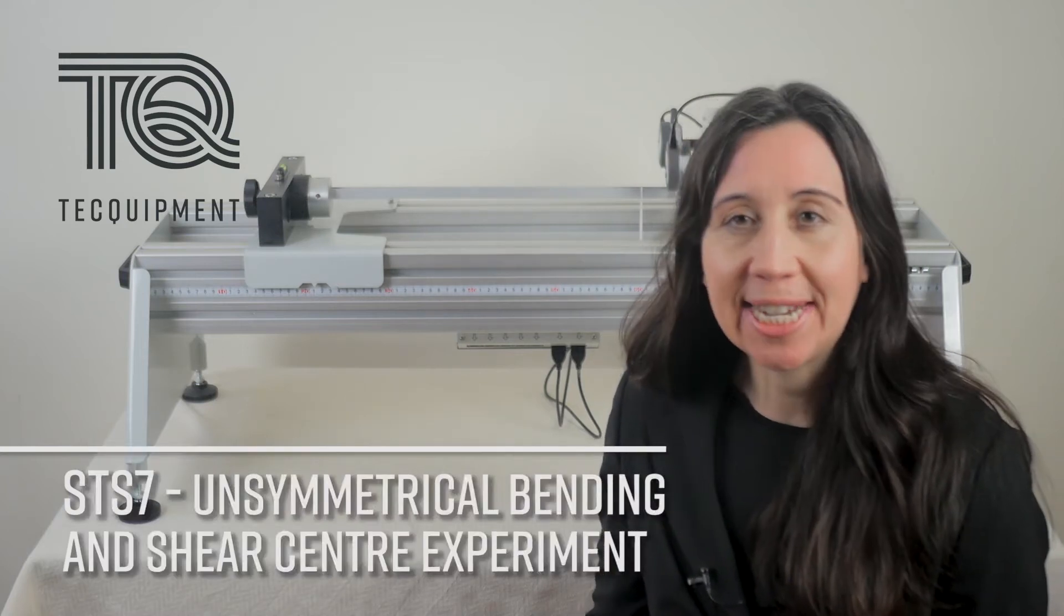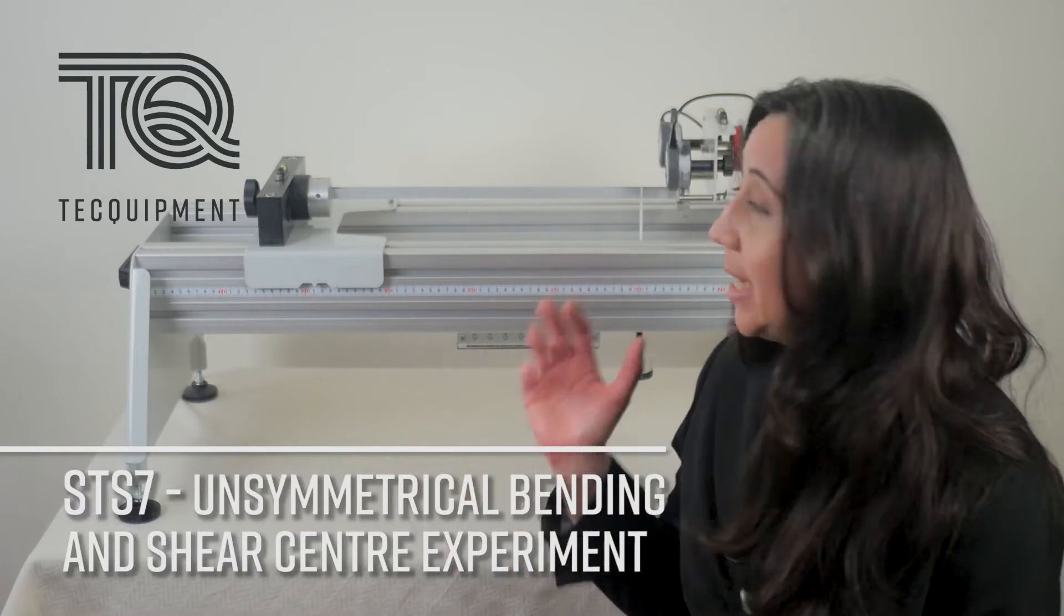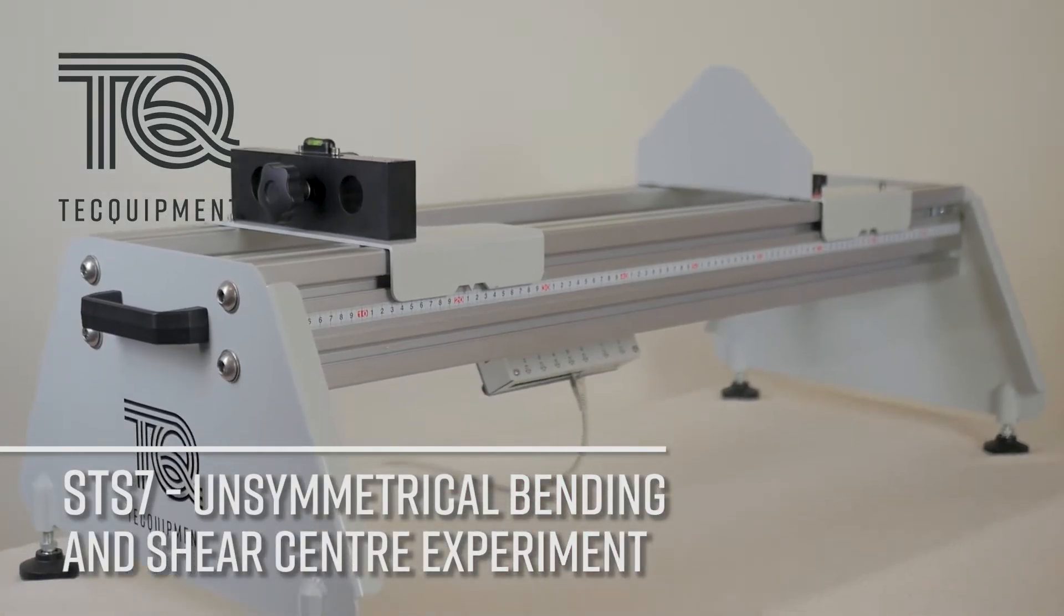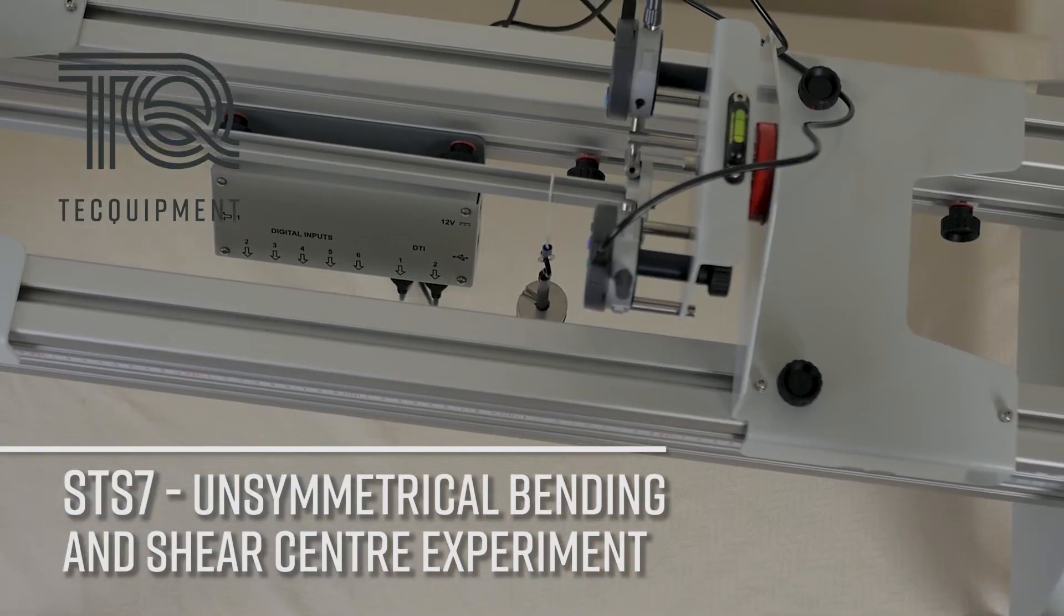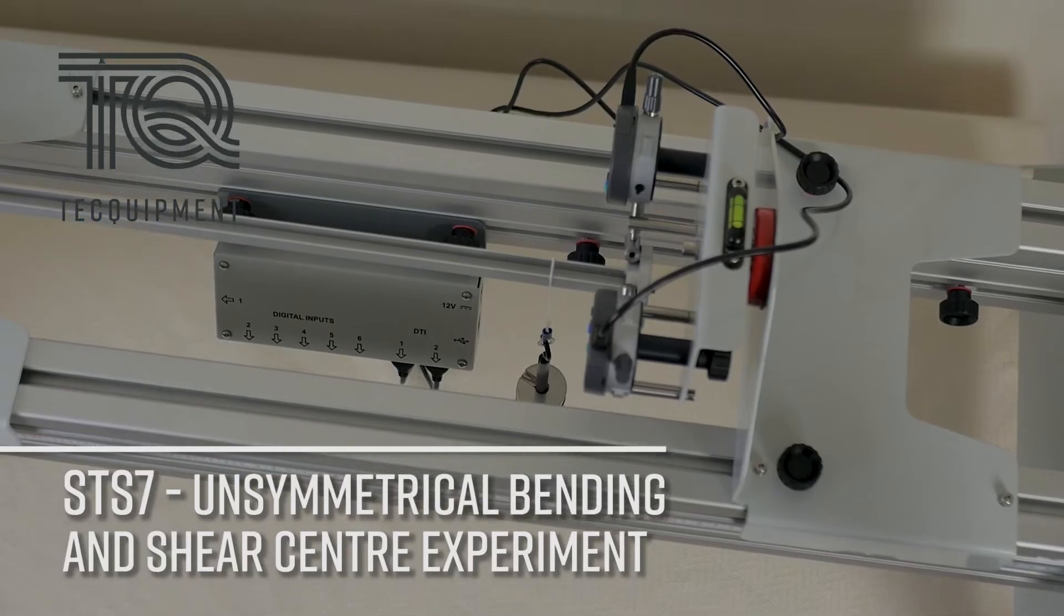In this video we will be demonstrating the unsymmetrical bending and shear center experiment, the STS7, in the next generation structures range from tech equipment. This allows you to study the vertical and horizontal deflection of different unsymmetrical sections.